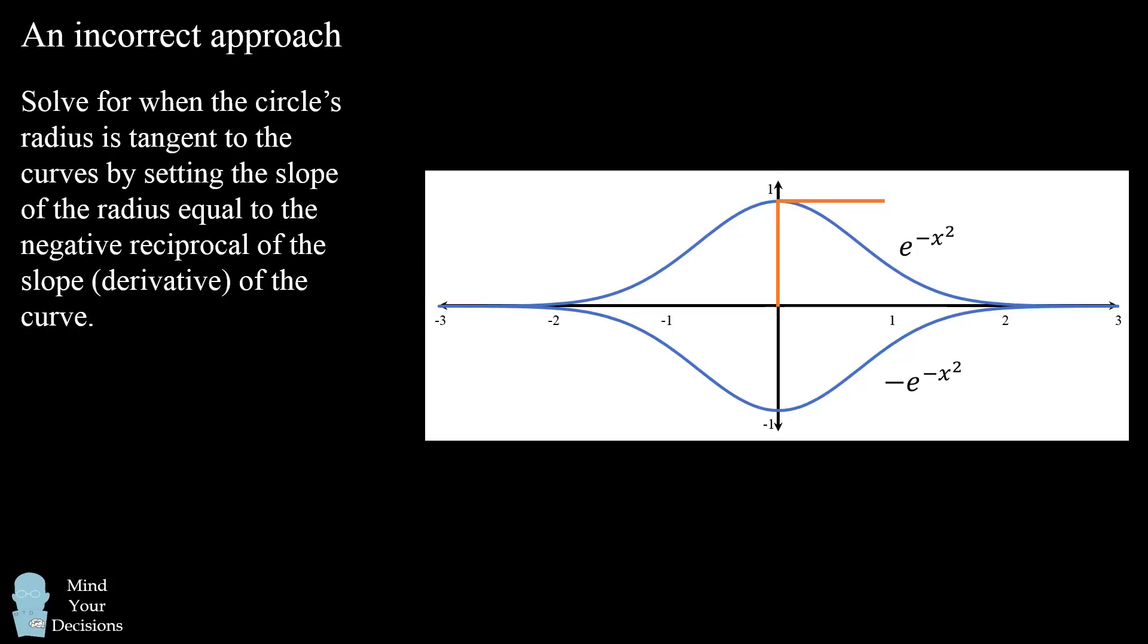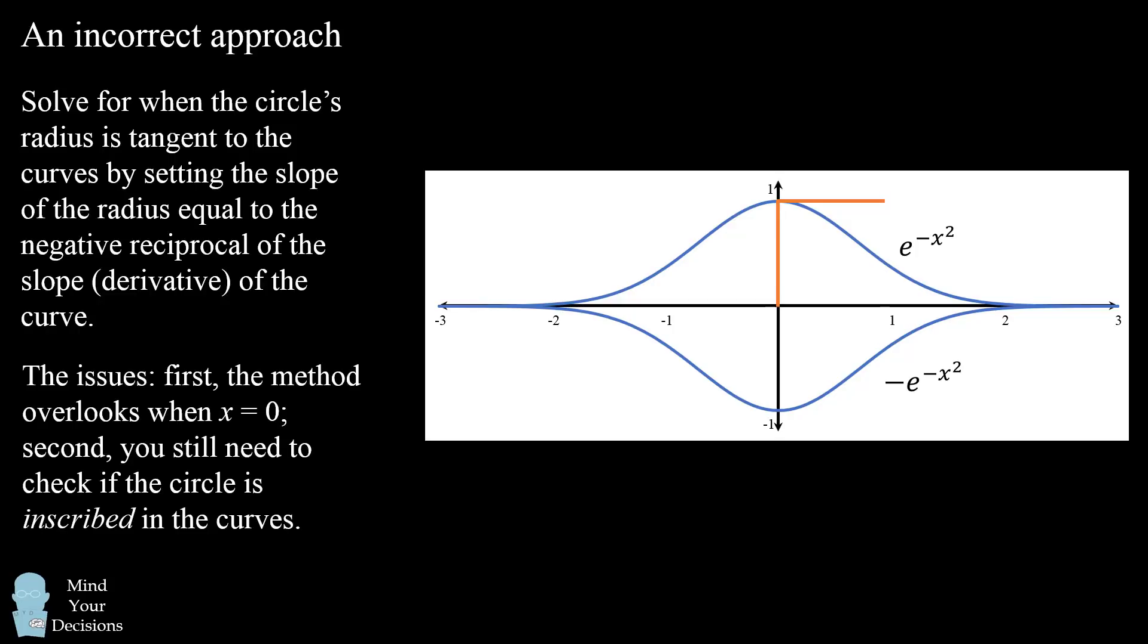But even if you were to manually check for this case, there would be another issue. You would not know whether this circle is wholly contained between these bell curves. And it turns out this particular circle is actually not bound by these bell curves, so it would not be totally inscribed between these curves.